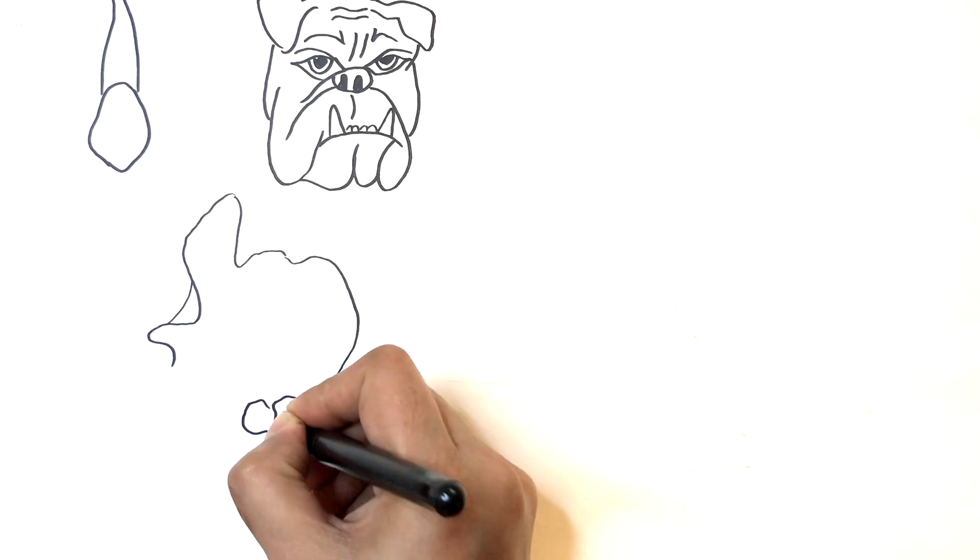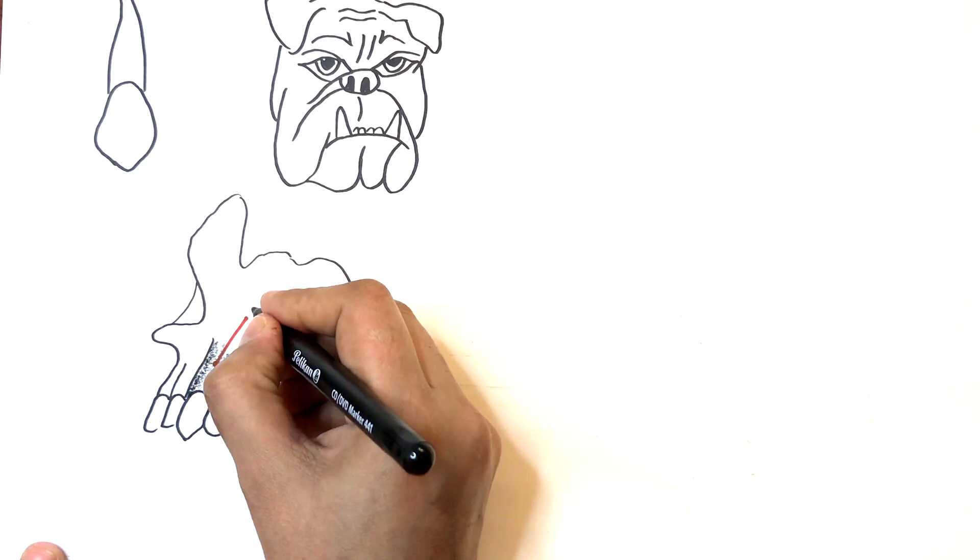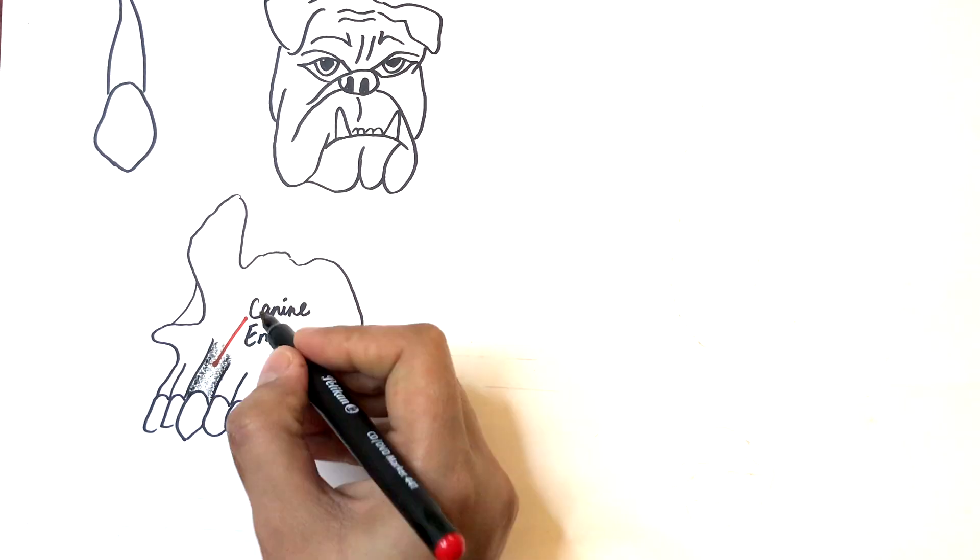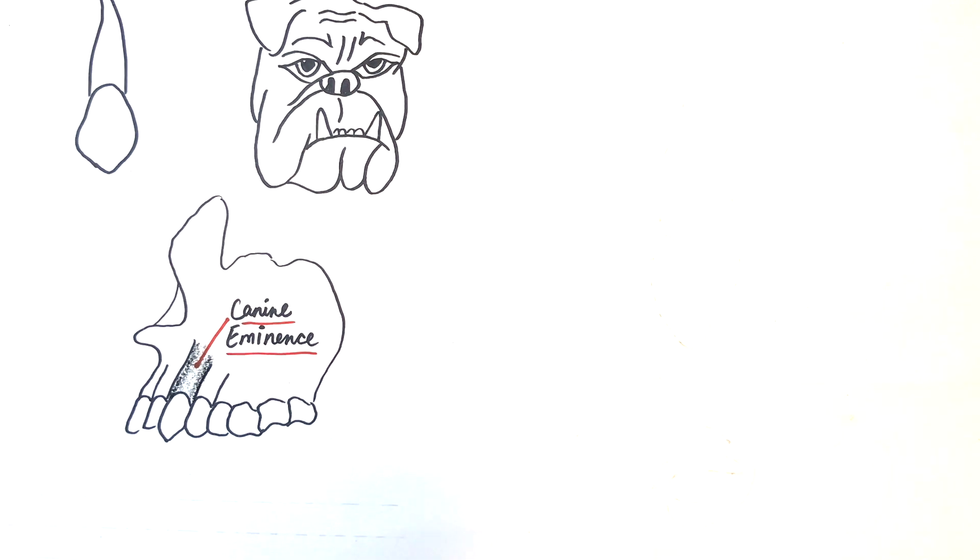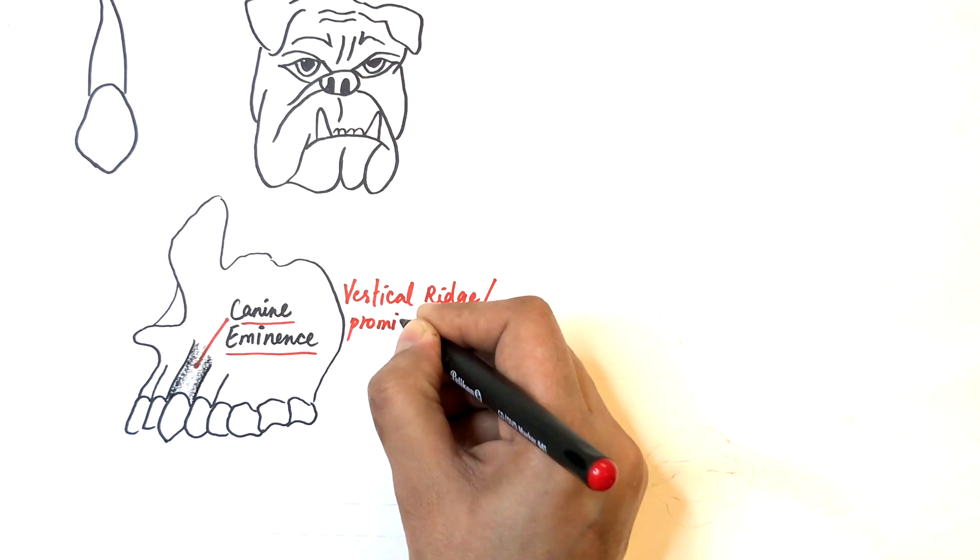The bony plate over a canine tooth in the maxilla is very thick and is called the canine eminence. The canine eminence is a vertical ridge or prominence on the external surface of the maxilla lying over the canine tooth, which provides the main support for the facial skeleton and facial musculature.